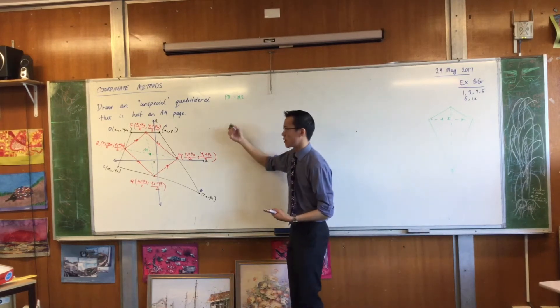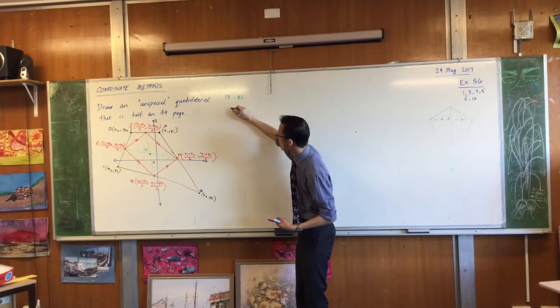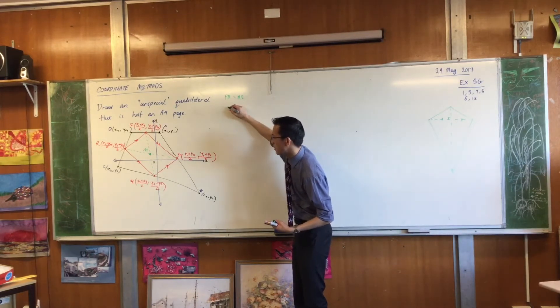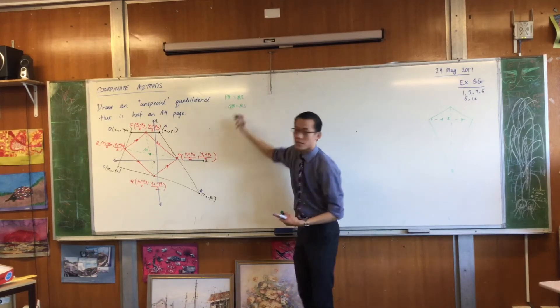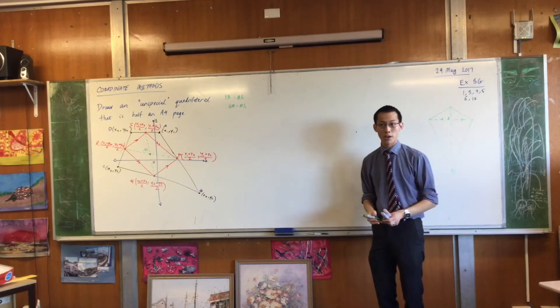And at the same time, I could, well not at the same time, afterwards, I would then prove that, what have I got down at the bottom? That's QM equals MS. That would do the job, wouldn't it?